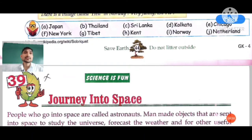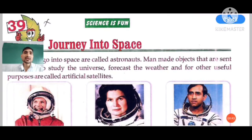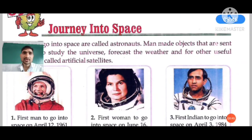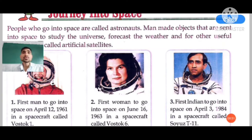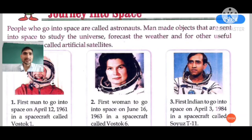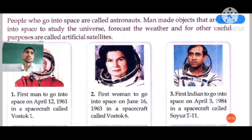Now chapter number 39: Science is Fun — Journey into Space. The first question: the first man to go into space on April 12, 1961, in a spacecraft called Vostok 1. The right answer is Yuri Gagarin. From the options you have to choose accordingly.